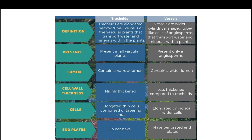Tracheids are present in all vascular plants, whereas vessels are present only in angiosperms. Tracheids have a narrow lumen whereas vessels have a wider lumen. The cell walls of tracheids are thick, whereas the cell walls of vessels are less thick. Cells in tracheids are elongated thin cells with tapering ends, while vessels are elongated cylindrical wider cells. Perforation plates are not present in tracheids, whereas vessels have perforated end plates.